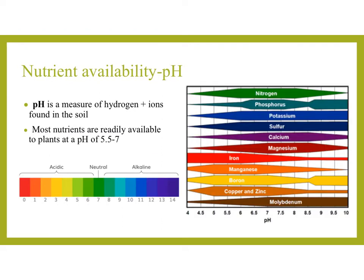Nutrient availability and pH. pH is a measure of the hydrogen ions found in the soil. Most nutrients are readily available to plants at a pH of between 5.5 to 7, which is within the neutral range. Within this range we're taking up a good amount of the nutrients that are available in the soil.